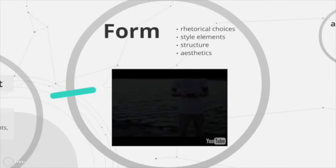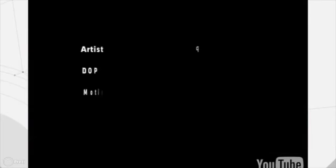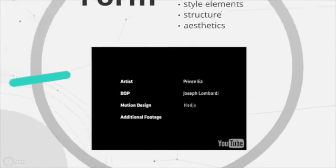So, we're going to revisit the video that Maimouna shared with us last class. And I want you to think of this video in terms of form, in terms of the rhetorical choices, style elements, structure, aesthetics. Now, that text is obviously a video. What is the form? What are the rhetorical choices, style elements, structure, and aesthetics?